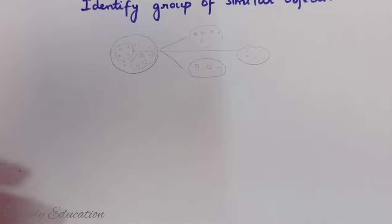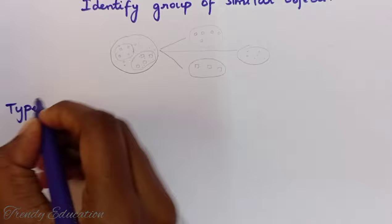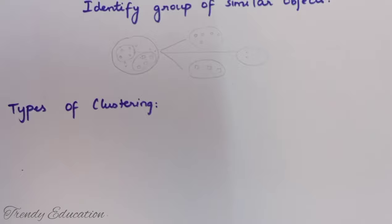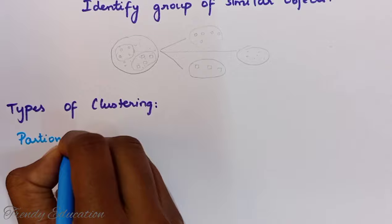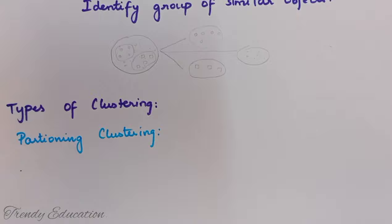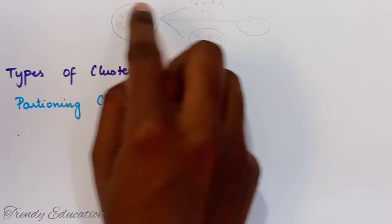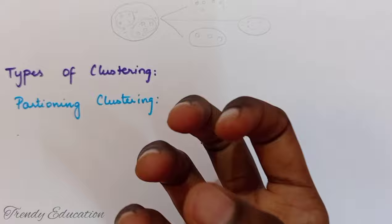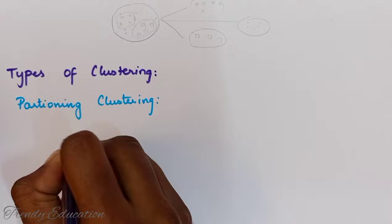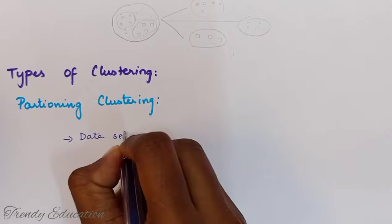Now let's move on to the types of clustering. The first clustering we are going to see is partitioning clustering. This is a very basic clustering type. What we are going to do is give a set of data and we are going to get a number of outputs — the groups are called clusters.